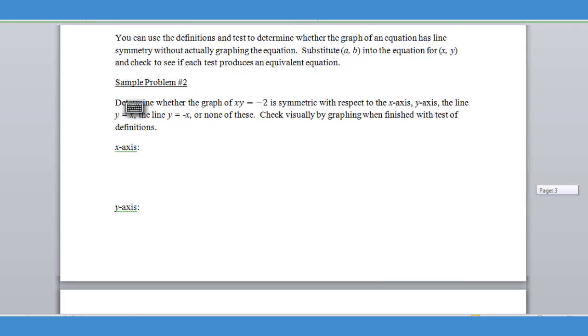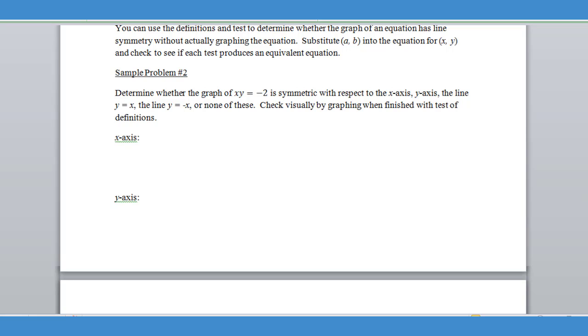Let's take a look at sample problem number two. We're given this equation AX equals negative two, and we want to check for line symmetry with respect to the given axis. What I'm going to do here is do the test by substituting A and B where appropriate for the X and the Y.